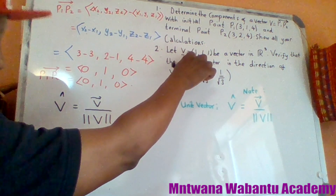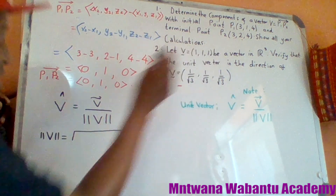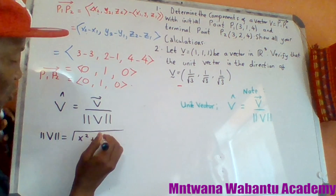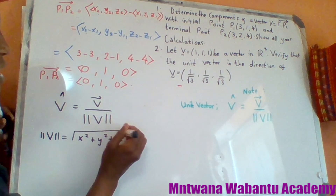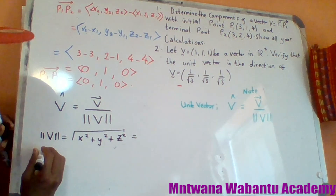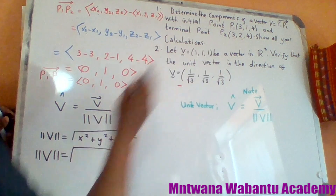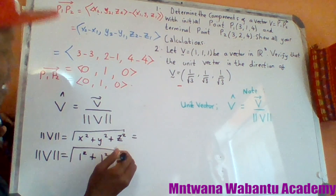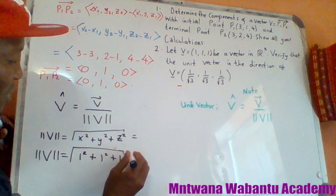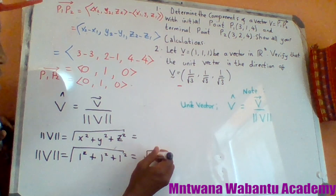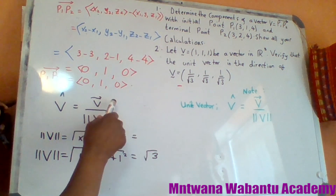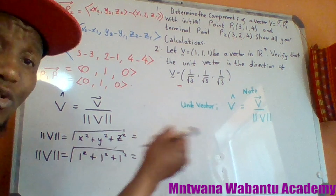The magnitude of a vector is computed by taking the square root of x squared plus y squared plus z squared. For our vector v equals (1,1,1): magnitude of v equals the square root of 1 squared plus 1 squared plus 1 squared, which equals the square root of 1 plus 1 plus 1 equals the square root of 3.